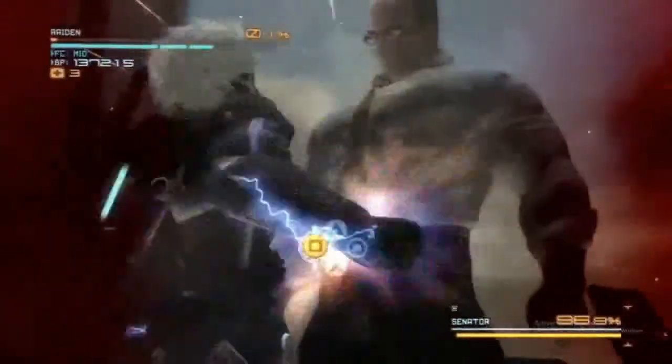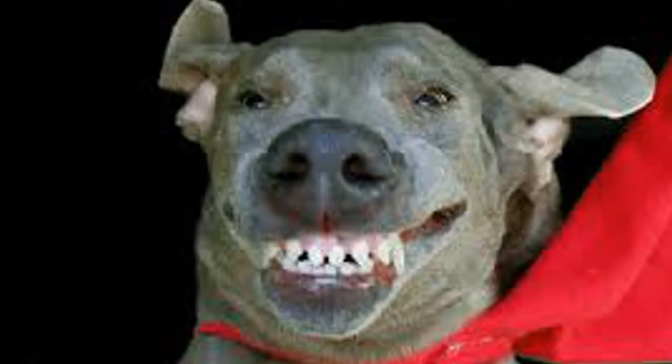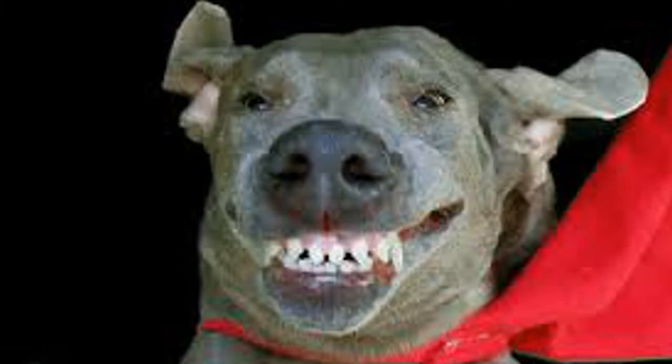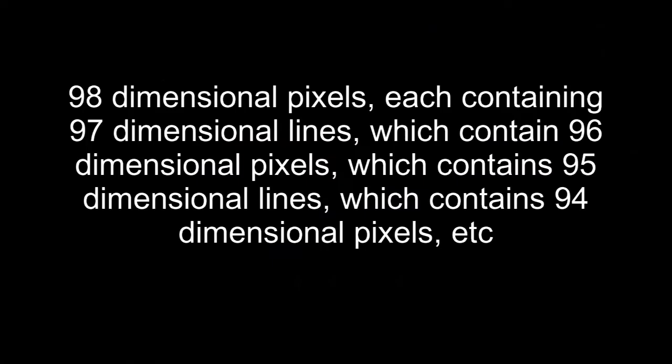For example, in a 3D computer game, each pixel on the computer's screen is 0-dimensional and only has one color. And if 2-dimensional people had 1-dimensional computers, they would see in a line that also contains pixels of 0 dimensions. If we use this formula, then a 100-dimensional person would see in a line consisting of 98-dimensional pixels. Each of these 98-dimensional pixels consists of a plane of 97-dimensional lines, which contains 96-dimensional points, and so on.